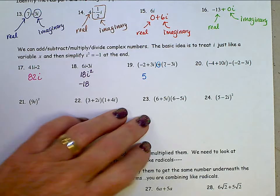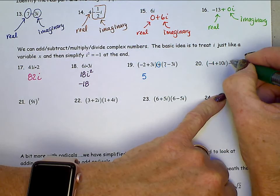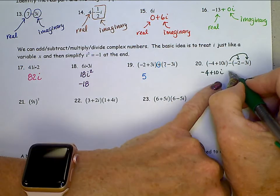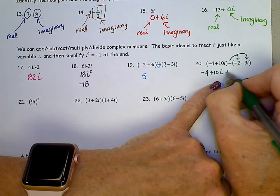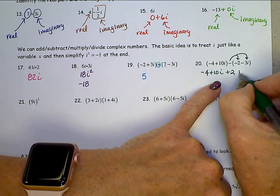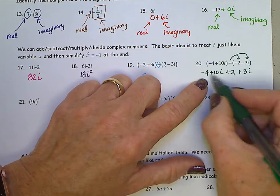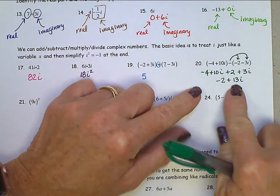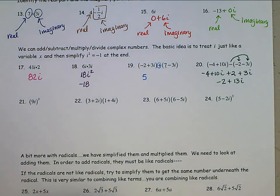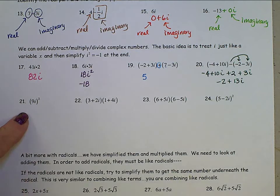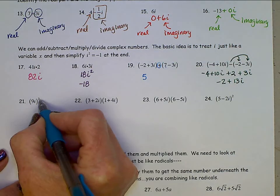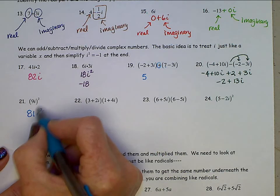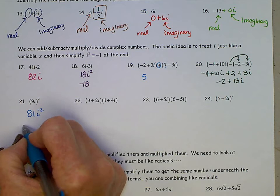This one is trickier because we have to subtract. Remember to distribute the negative sign through the parentheses. So we'll have negative 4 plus 10i, then minus a negative 2 becomes plus 2, and minus a negative 3i becomes plus 3i. Combining like terms, we have negative 2 plus 13i, and that's the final answer.